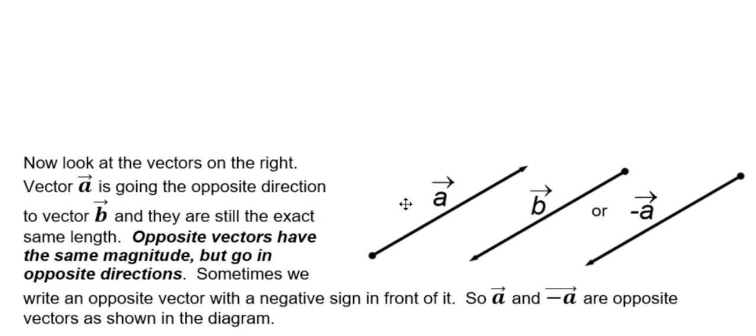So look at the vectors here on the right. Vector a is going the opposite direction to vector b. They are going in opposite directions. They would be parallel if they were going in the same direction.